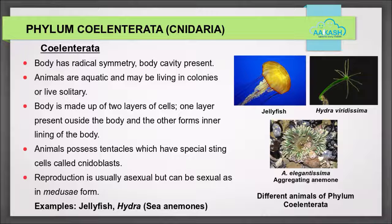Examples for Phylum Porifera are Spongilla, Euplectella, and Sycon. Phylum Coelenterata: animals of this phylum possess a body with radial symmetry and show presence of a body cavity. These animals are aquatic and may live in colonies or be solitary. Their body is made up of two layers of cells — one layer present outside the body and the other forming the inner lining. Animals possess tentacles which have special sting cells called nematocysts.